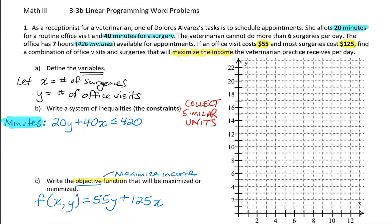The last piece of information is that the veterinarian cannot do more than six surgeries per day. That's a constraint in and of itself — there are no other numbers or units attached to it. No more than six surgeries means x is less than or equal to 6 but it can't be more than six. So that's our surgery constraint: x ≤ 6.